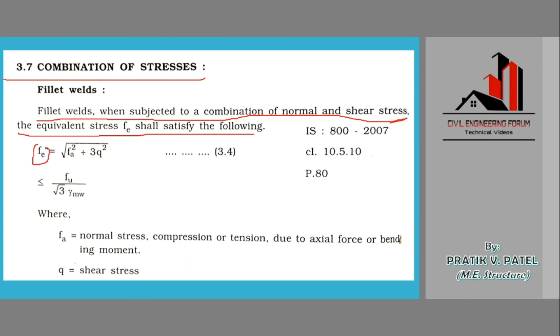We have introduced a new stress, that is equivalent stress fe, that is the combination of both normal and shear stress. So square root of normal stress or compression stress or tension stress due to axial or bending moment, this plus 3 into q, that is shear stress as mentioned over here, fa and q. This is the combination of both.